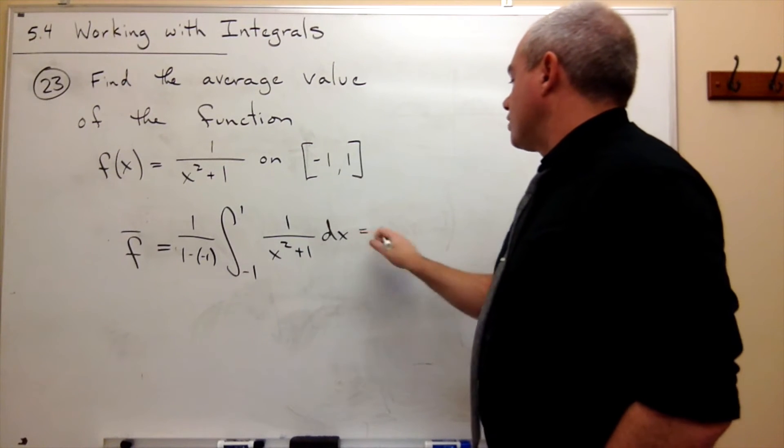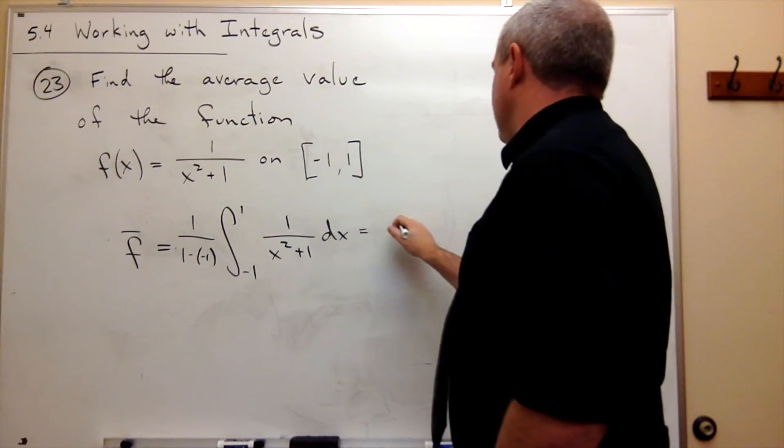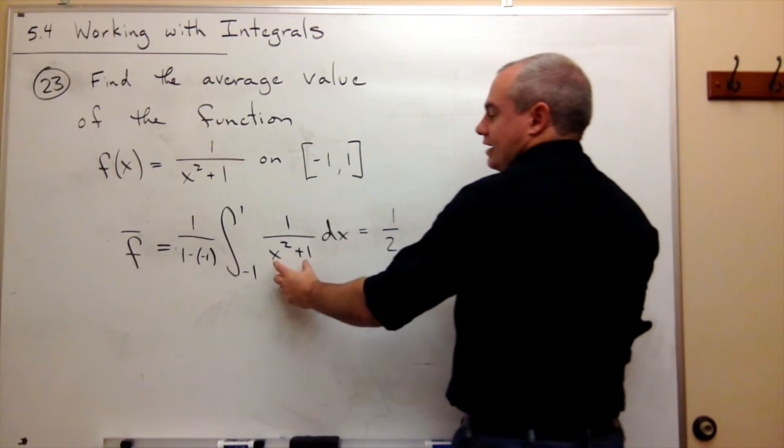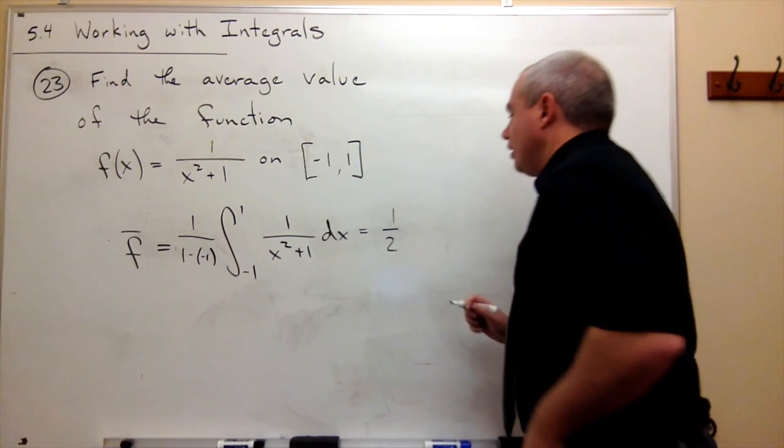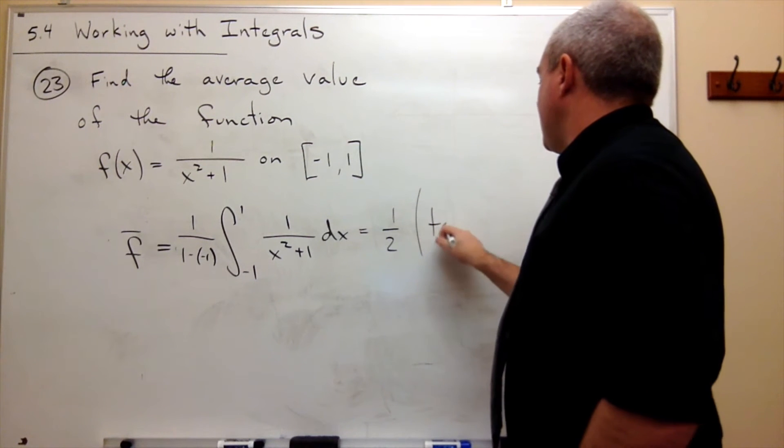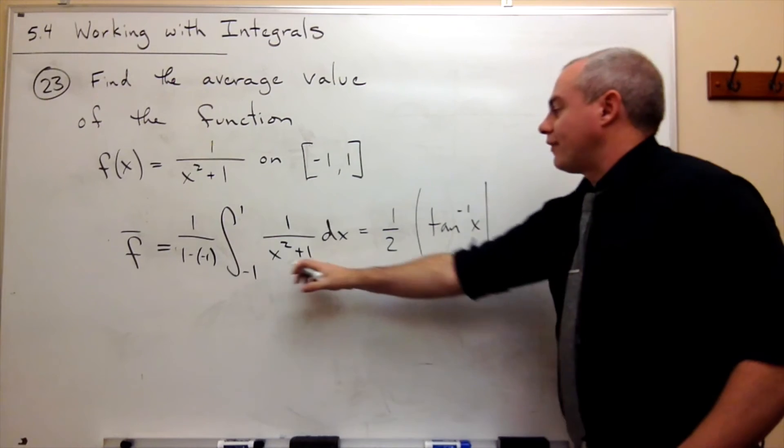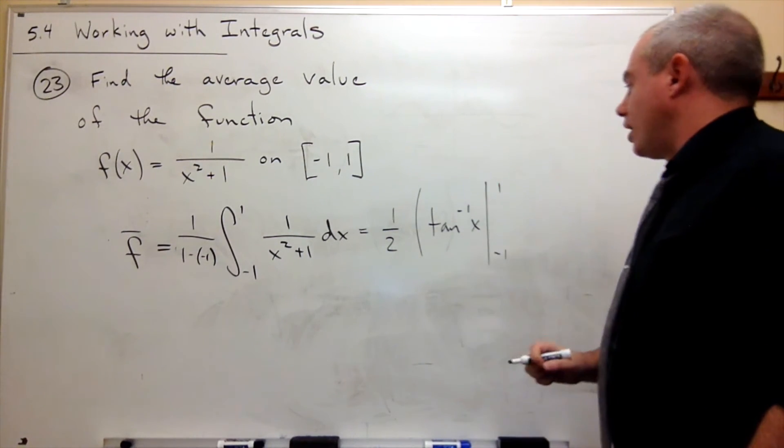So what we get here is 1 over 2 times the antiderivative of 1 over x squared plus 1. We know that is tan inverse of x, and we're going to evaluate that from minus 1 to 1.